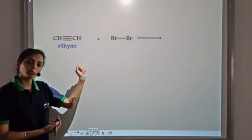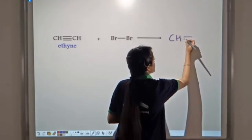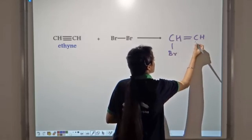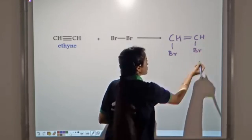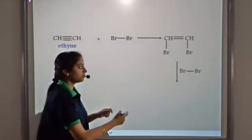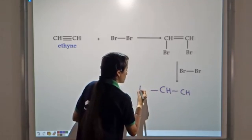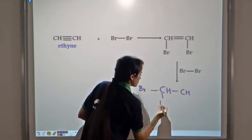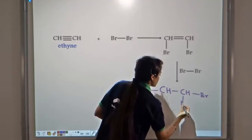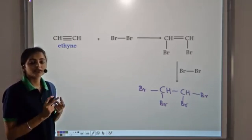Another example: ethyne reacting with bromine. This also happens in two steps. First, the triple bond is converted into a double bond — the alkyne forms an alkene. In the second step, the double bond breaks into a single bond, completing the saturation of the alkyne in two steps.